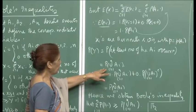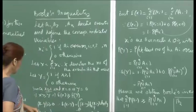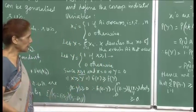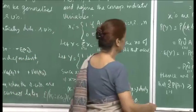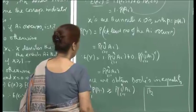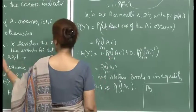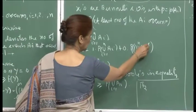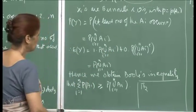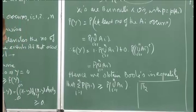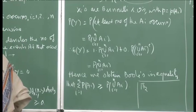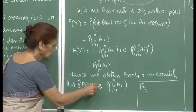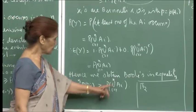Since Y is 1 if X ≥ 1, this translates to at least one of the events A1, A2, ..., An occurring. So E(Y) = 1·P(union Ai) + 0·P(complement of union Ai) = P(union Ai, i from 1 to n). Hence, we obtain Boole's inequality: Σ P(Ai) ≥ P(union Ai), for i from 1 to n.